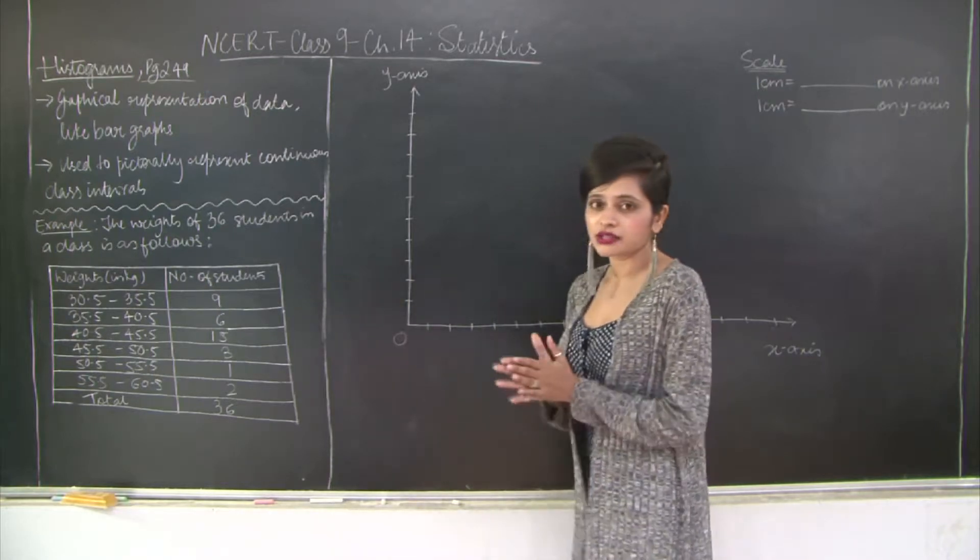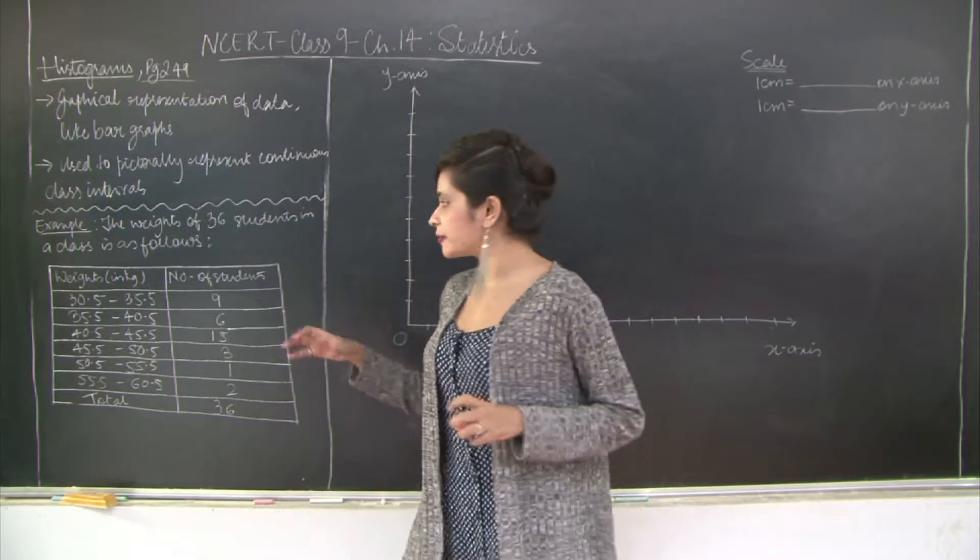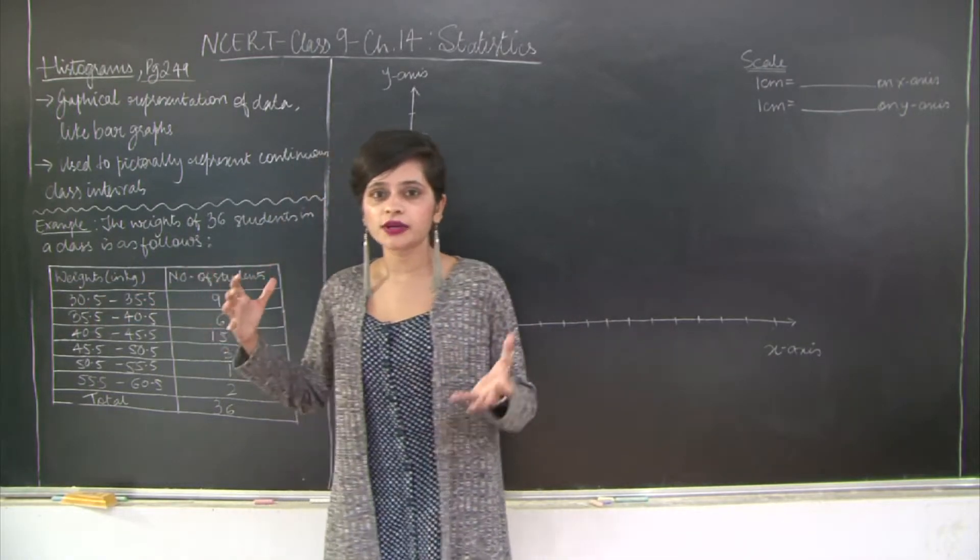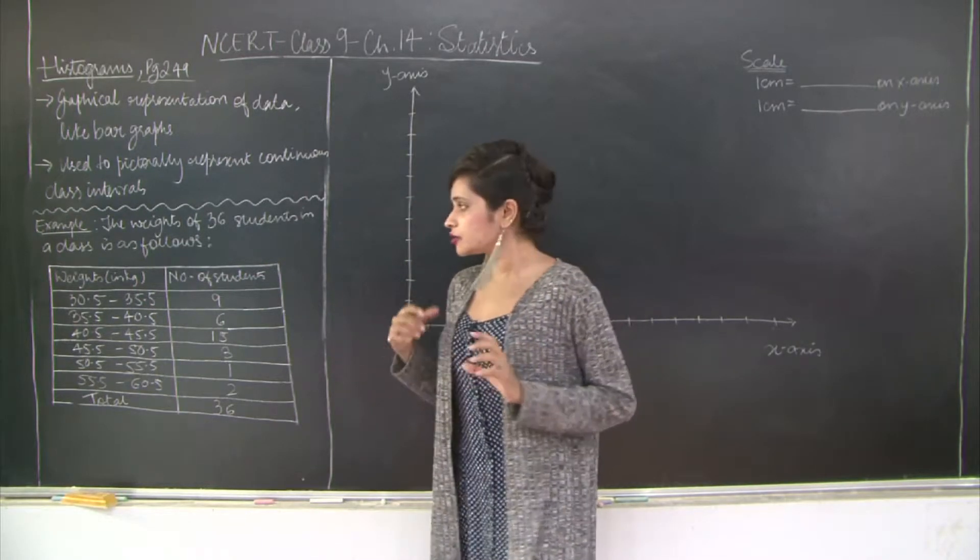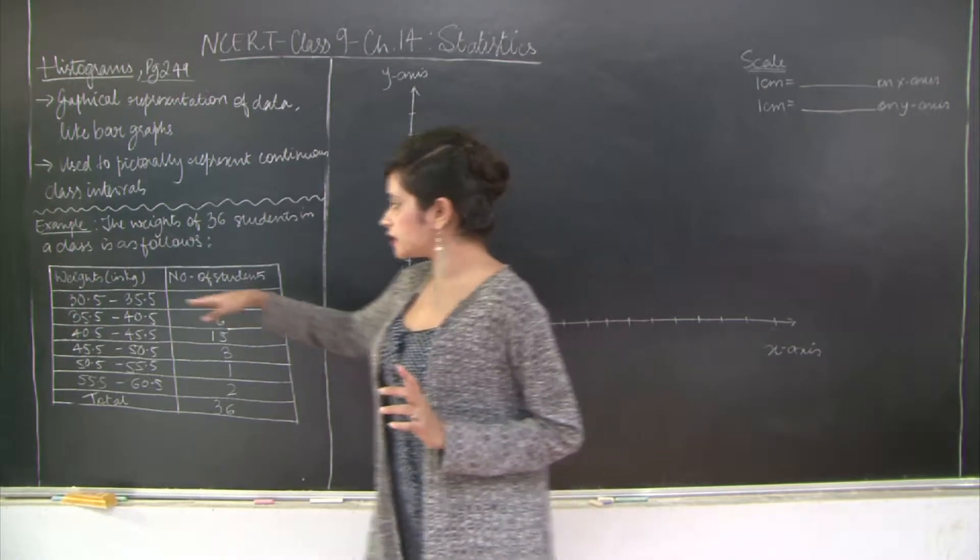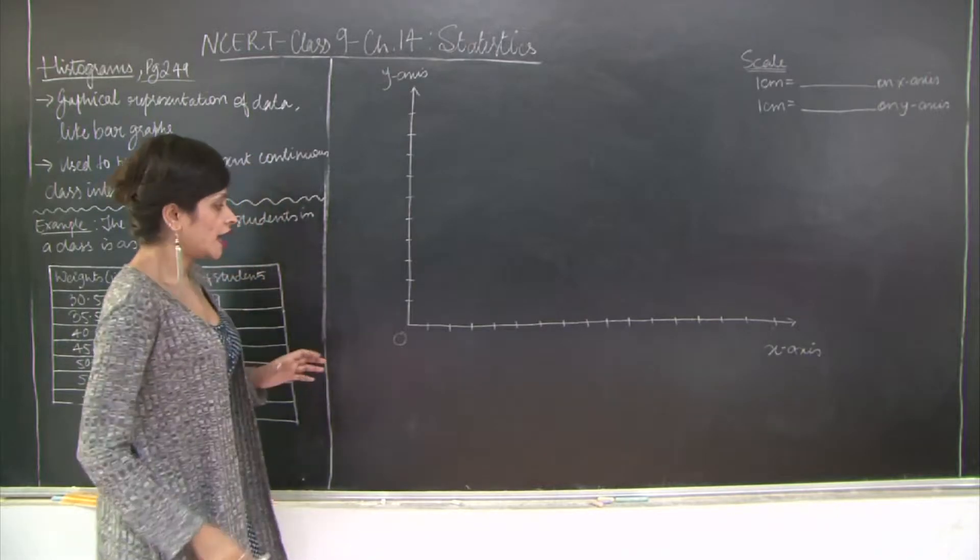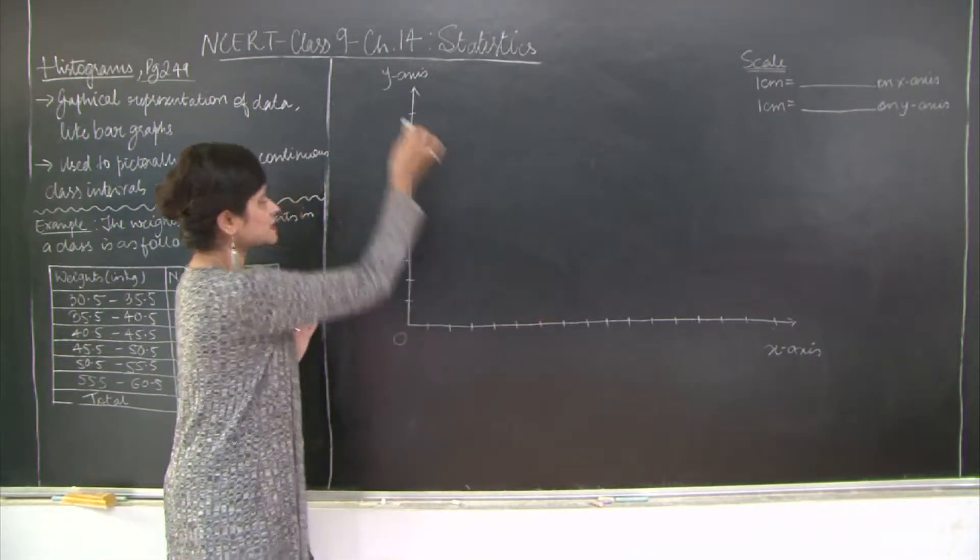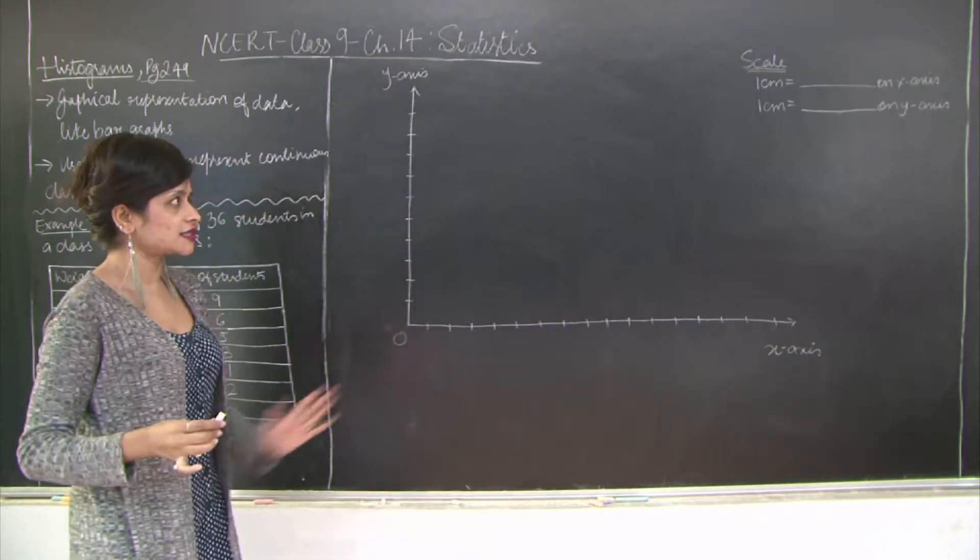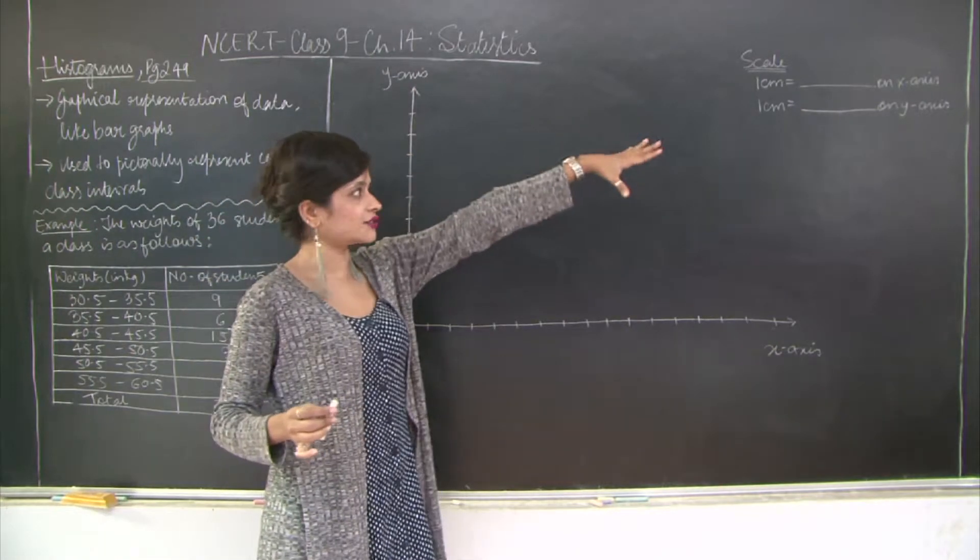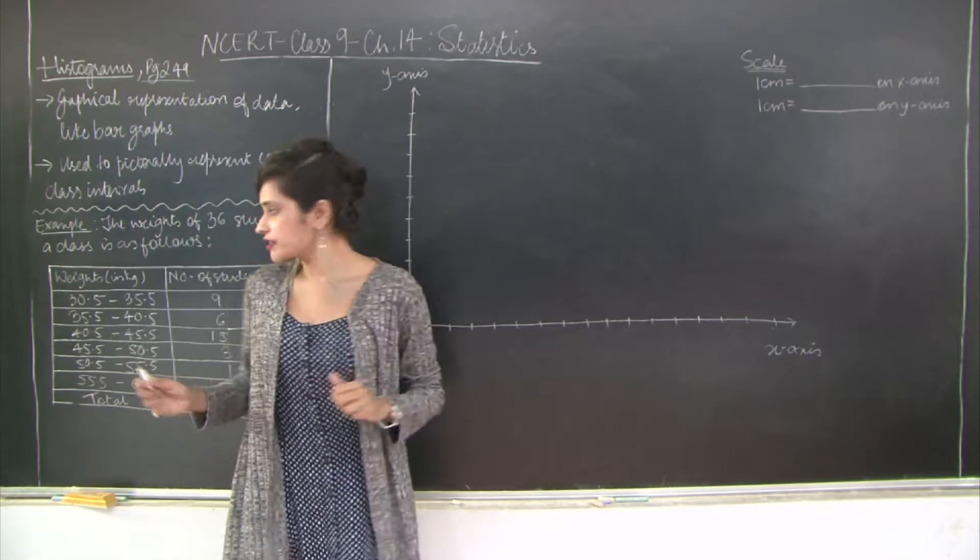How do we plot this? Obviously this cannot be done on the bar graph because here we have a range. In bar graphs we had specific categories, but here we have continuous class intervals. We have our coordinate axis with x-axis, y-axis, and origin marked at zero.